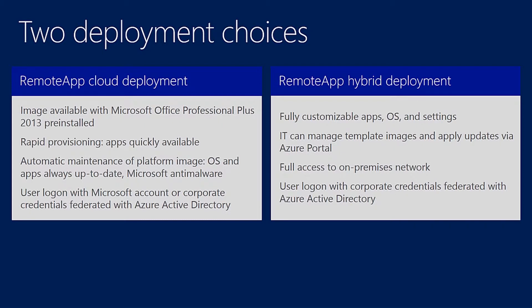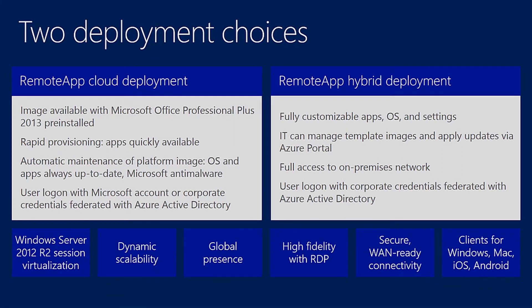The other deployment choice is our hybrid deployment. This is fully customizable — we can install our own corporate applications, customizable apps, and configure the operating system to meet our group policies or corporate compliance. IT also has the ability to manage these images and apply updates at their own will. In addition, we have full access to network resources, connecting back to corporate resources such as SQL databases or application servers, and we can support user login with corporate credentials federated with Azure Active Directory.